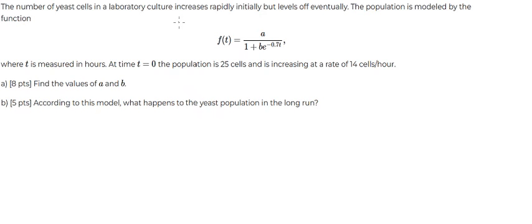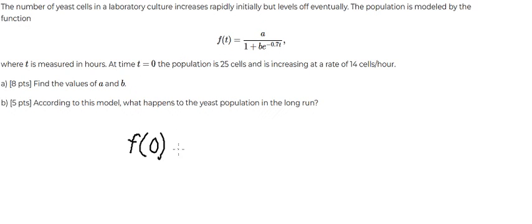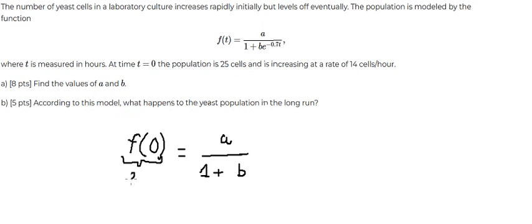Hello everybody. Today I want to show you how to answer the first part. If we put number zero in here, that means we have number zero. So e to the power of number zero gives us number one. We know that at t equals zero the population is 25, so this value gives us 25. So we put 1 plus b multiplied by 25 in here.